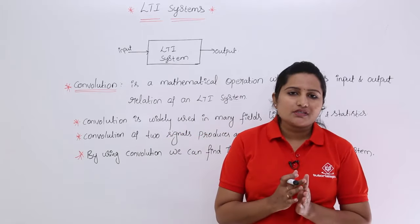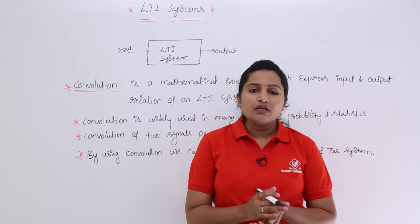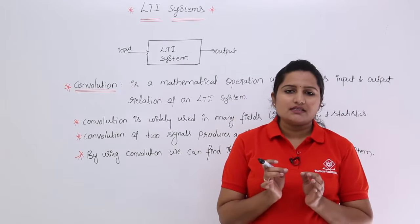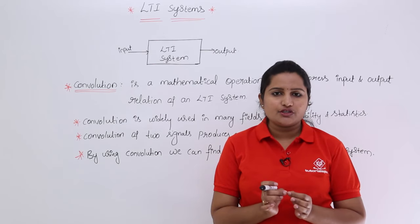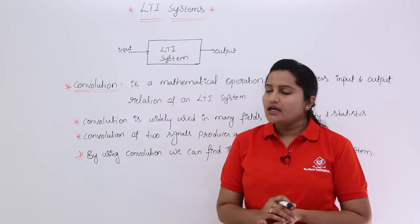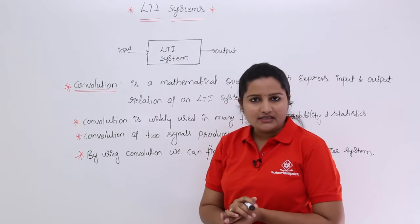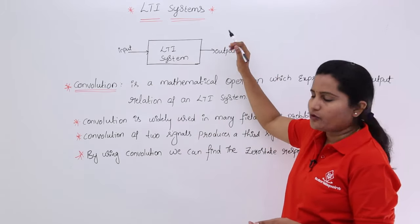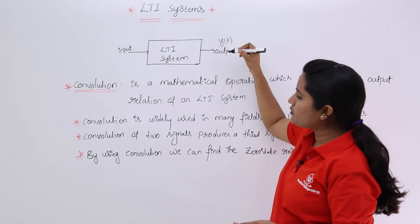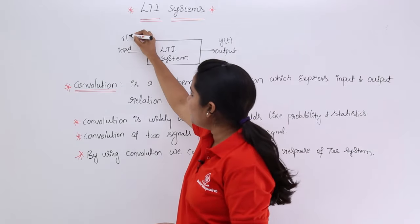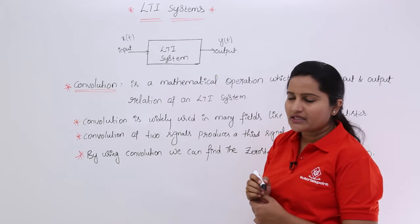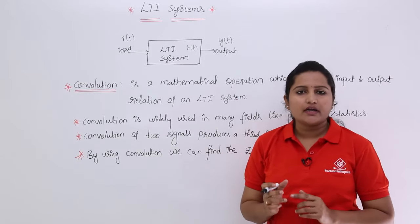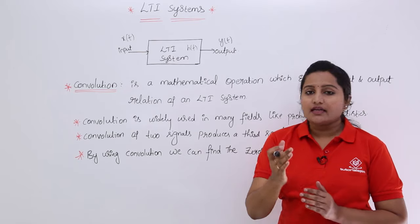We are going to use the convolution concept in LTI systems to find the response of a particular LTI system. That means if you want to relate the system's impulse response and input to get the output, you need convolution. For example, if you have an LTI system with input x(t), output y(t), and impulse response h(t), then to find the relation between them you require convolution.